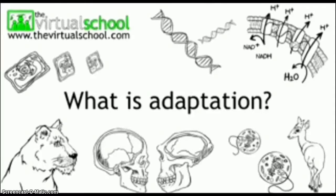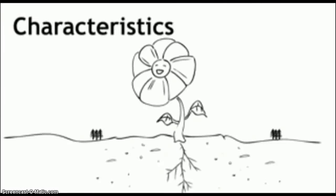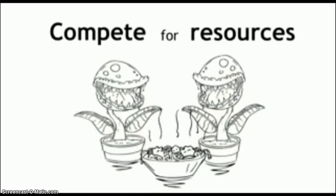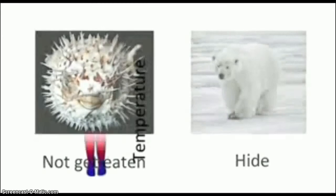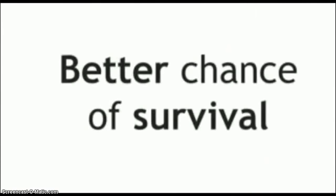An adaptation is a characteristic which helps an organism to survive in its environment. Plants and animals must adapt so that they can compete for resources and live successfully in their habitat. Some adaptations can help organisms to not get eaten, hide, control body temperature, or prevent water loss. An adaptation gives an organism a better chance of surviving in its environment.